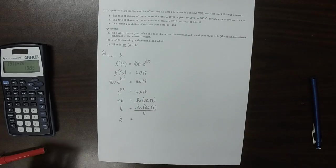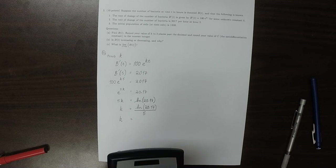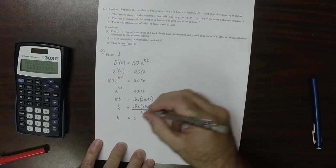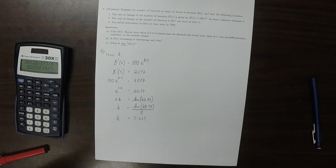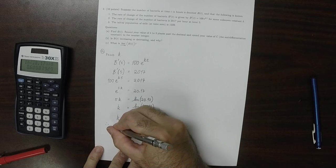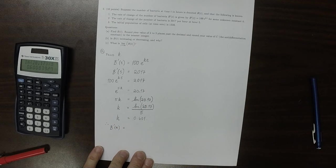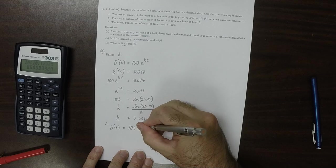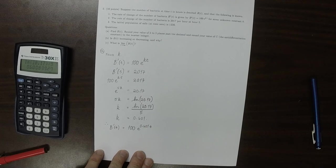And following the instructions that say round to three places past the decimal. So then log 20.17 divided by 5, rounding to three places, that's 0.601.